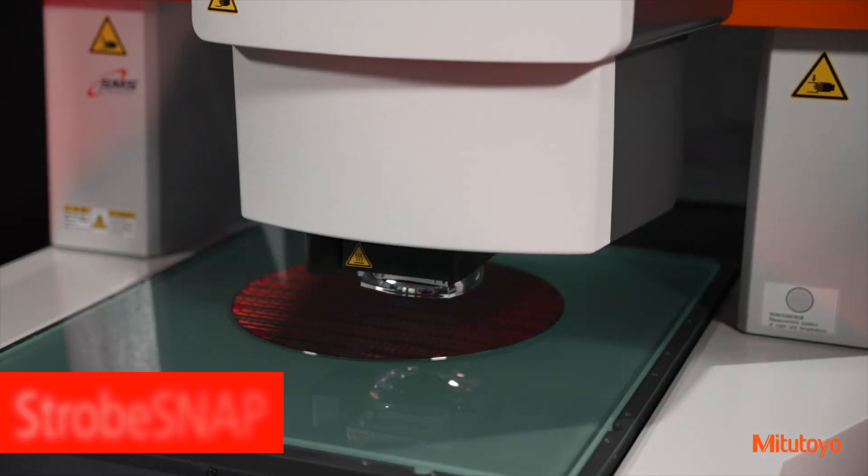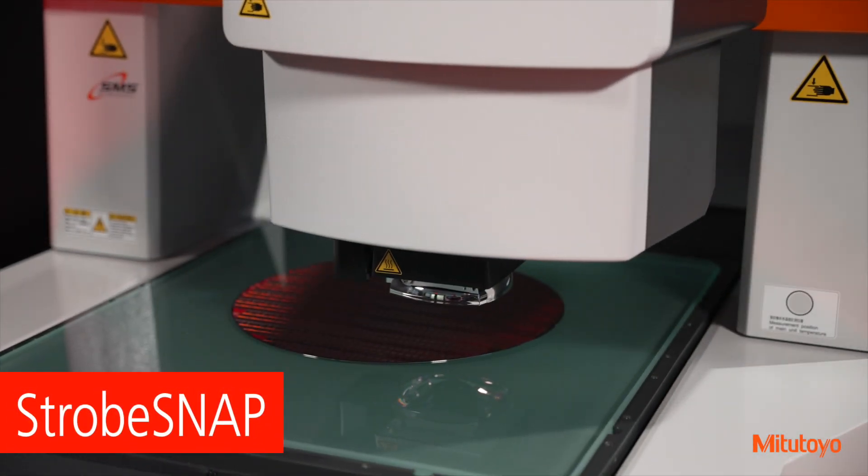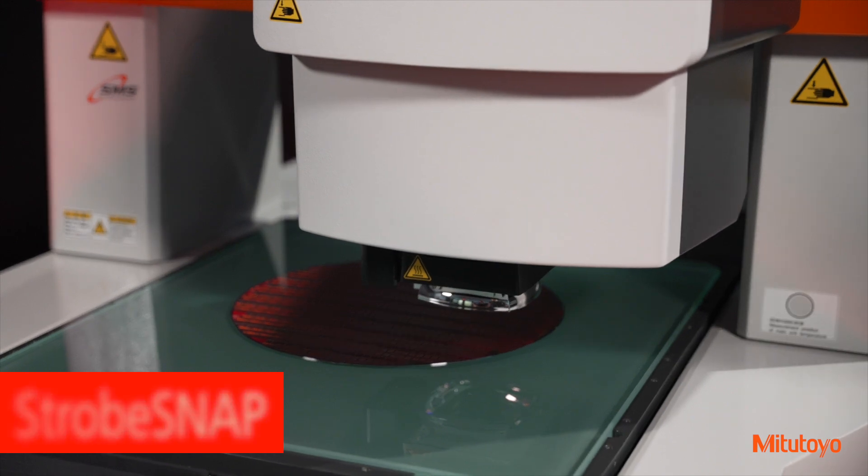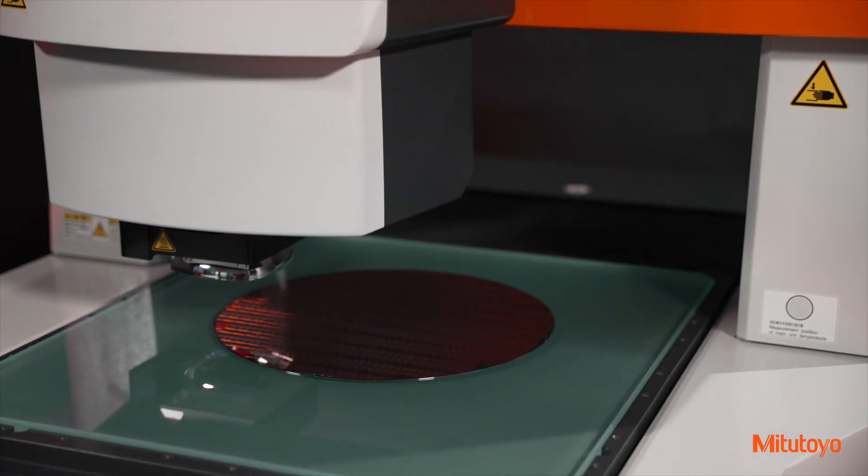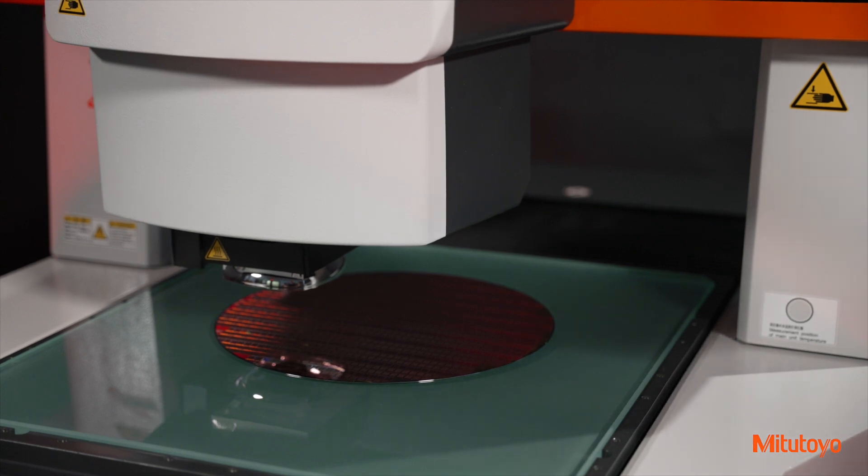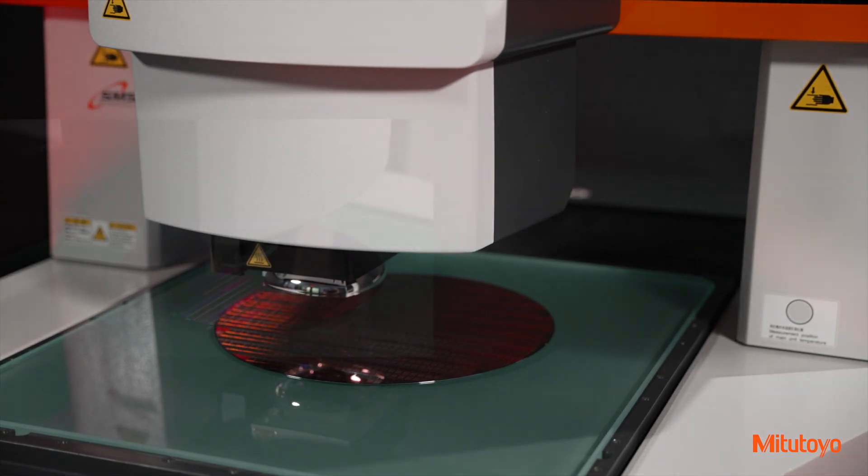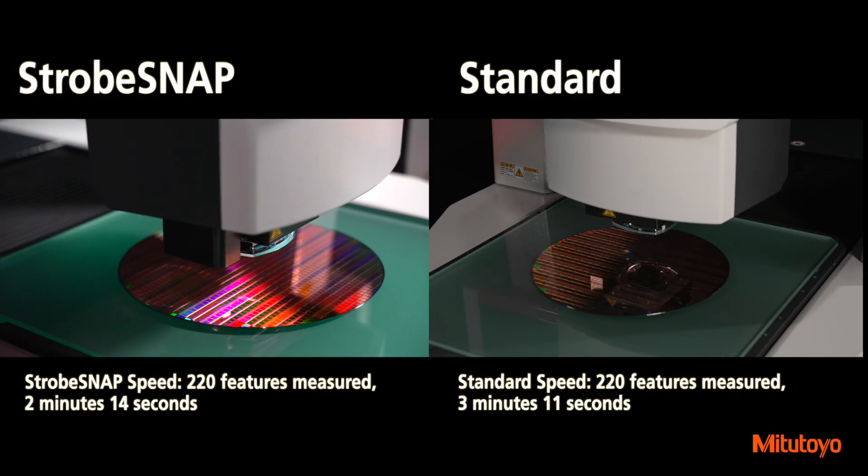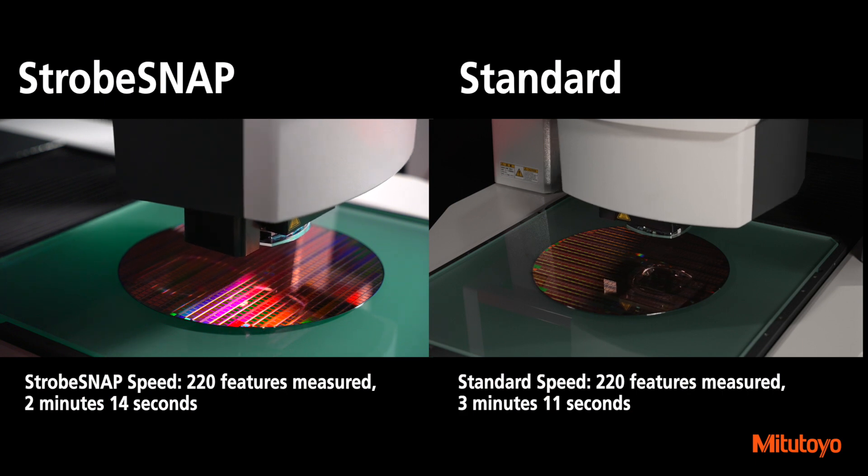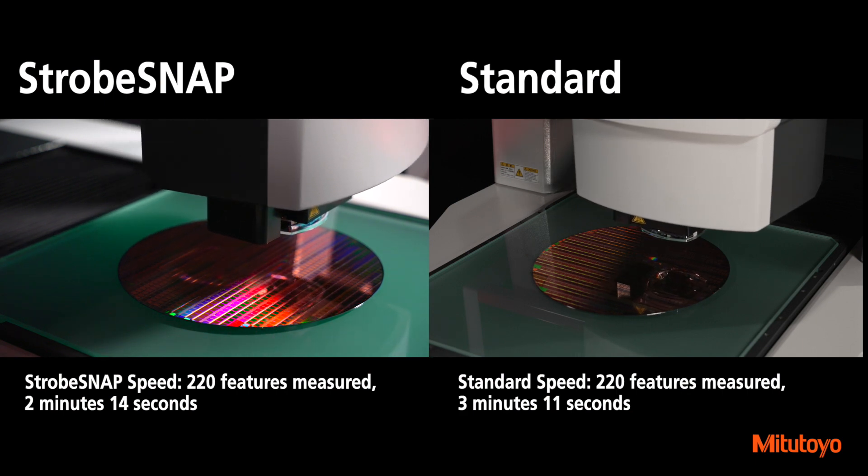Camera measurement speed has been significantly improved with the new strobe snap feature. Strobe snap combines high-speed stream feature measurements with the traditional QuickVision high-speed motion between features. Depending on part features, strobe snap can measure up to 45% faster than traditional measurement modes.